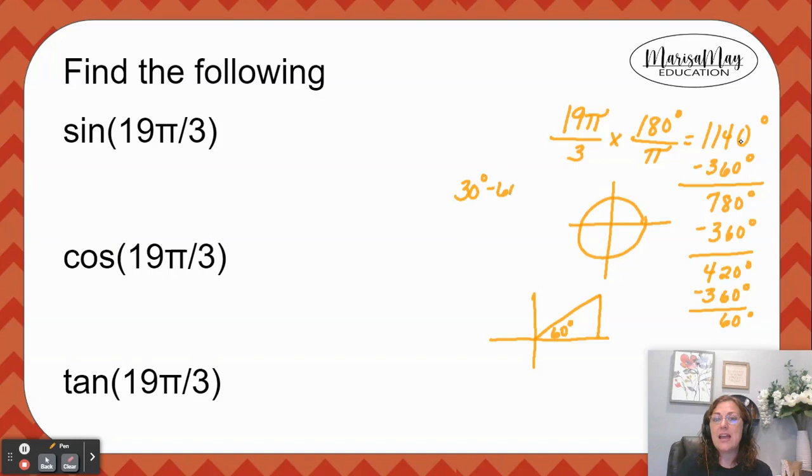And your 30 has to be opposite the shortest leg which is 1 in your ratio, 60 is your square root of 3, and of course your hypotenuse there is 2. So go ahead and label: across from the 60 is your square root of 3, across from your right angle is 2, and then the other side has to be 1.